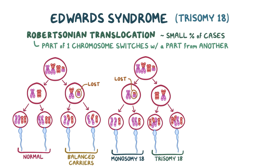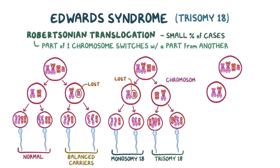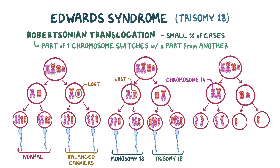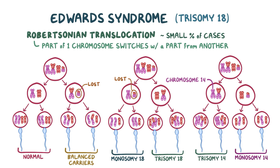If this process were switched such that chromosome 14 ended up with the long chromosome first, then you'd ultimately end up with trisomy 14 and monosomy 14. So out of the 12 possibilities, two end up being trisomy 18, and they will have all the symptoms.